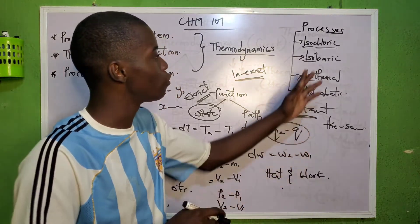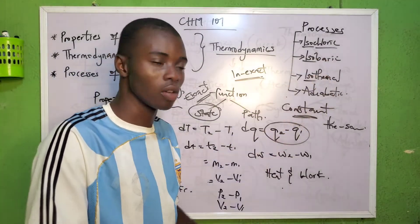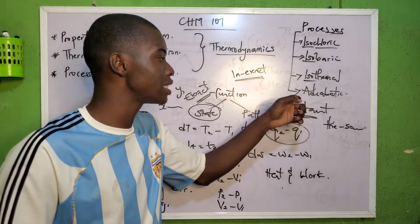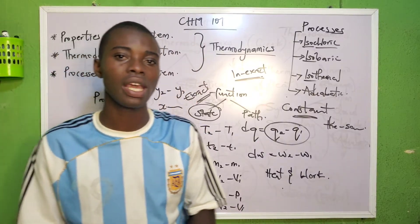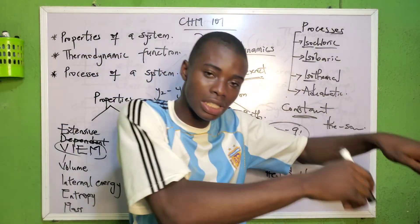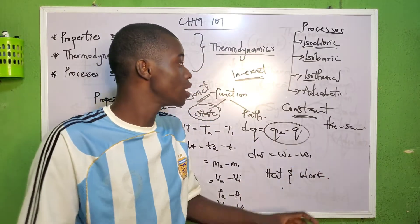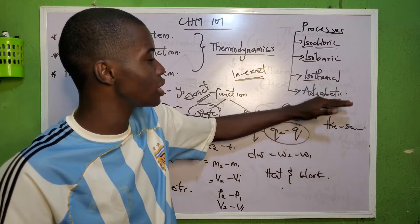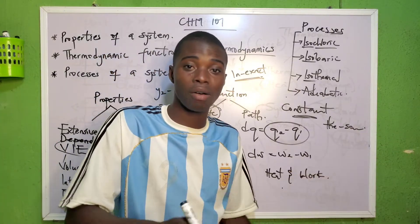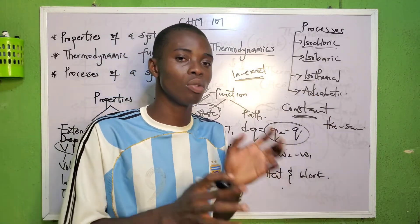For an isochoric process, volume is constant throughout the system. For an isobaric process, pressure is constant. For an isothermal process, temperature is constant. For an adiabatic process, we don't say heat is constant — we say heat is neither supplied to the system nor removed from it. If heat cannot be supplied and cannot be removed, the system is adiabatic.